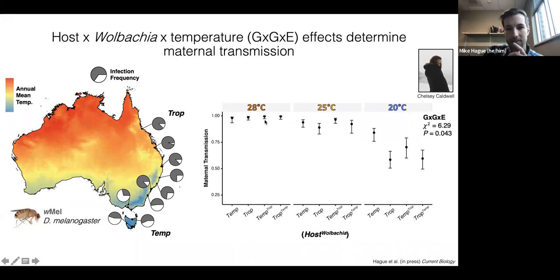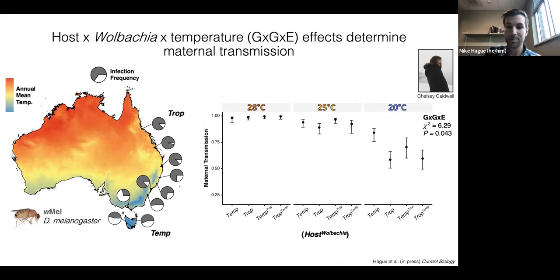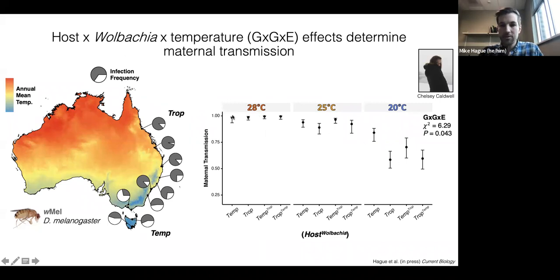At 28°C, transmission was near perfect for all four genotypes. As temperature declines to 25°C, transmission slightly declines, but a host effect becomes clear: the temperate host background generally has higher rates of transmission than the tropical host background. As we move to 20°C, transmission declines further, but we see the G×G×E interaction effect becoming clear: the specific combination of the temperate host and the temperate Wolbachia genome has uniquely high rates of transmission in the cold relative to the other three genotypes. This was really exciting because it suggests a pattern of co-adaptation where temperate Wolbachia and hosts have co-adapted for increased transmission in a temperate climate.